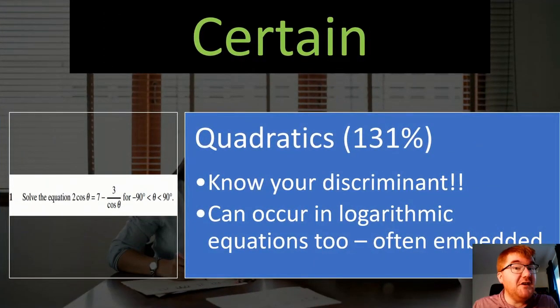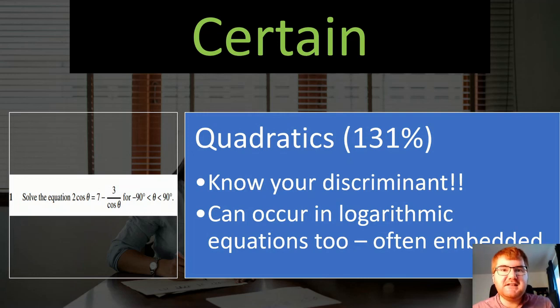Quadratics comes in 131%. So you can see it comes up every time and sometimes even two questions. And you really need to know your discriminant. B squared minus 4AC and three conditions. That's really, really important. It can also occur in logarithmic equations, often embedded. Or the question I picked out here, we're going to mention very soon about trigonometry. It can also appear in trigonometric equations too. So make sure you've covered it in a lot of different contexts.